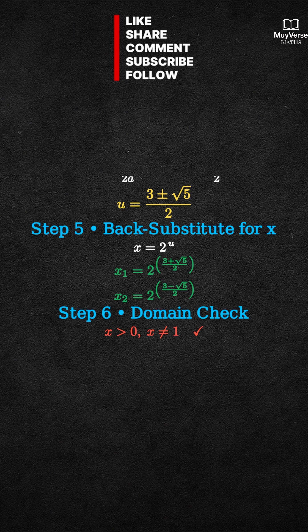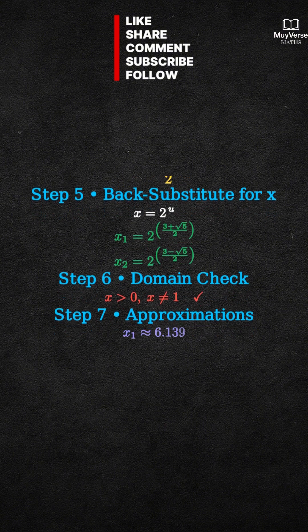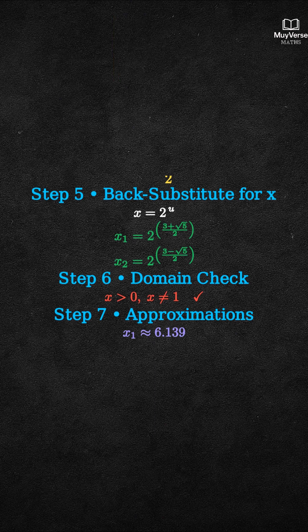Step 7: compute useful approximations. x₁ is approximately 6.139, and x₂ is approximately 1.303.